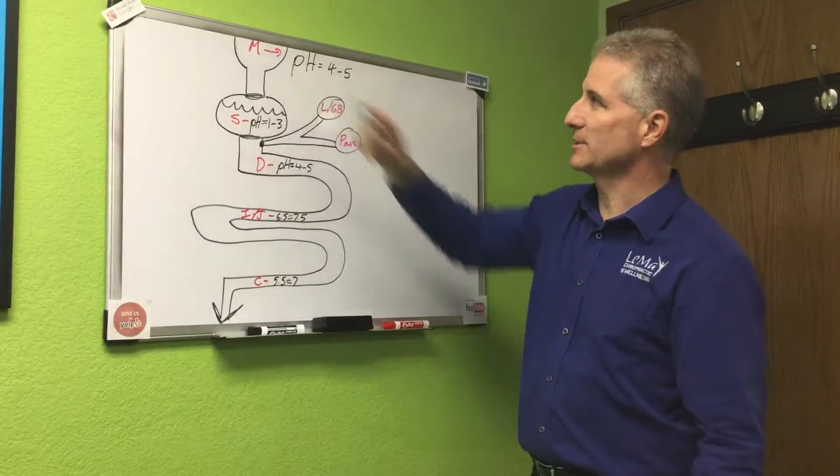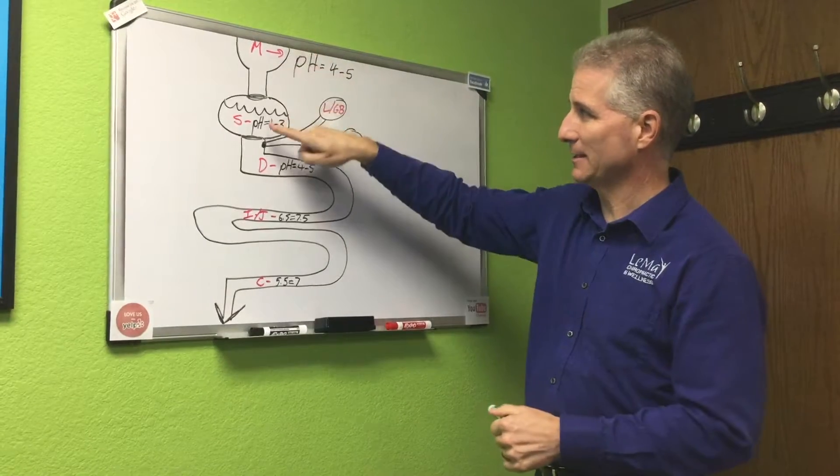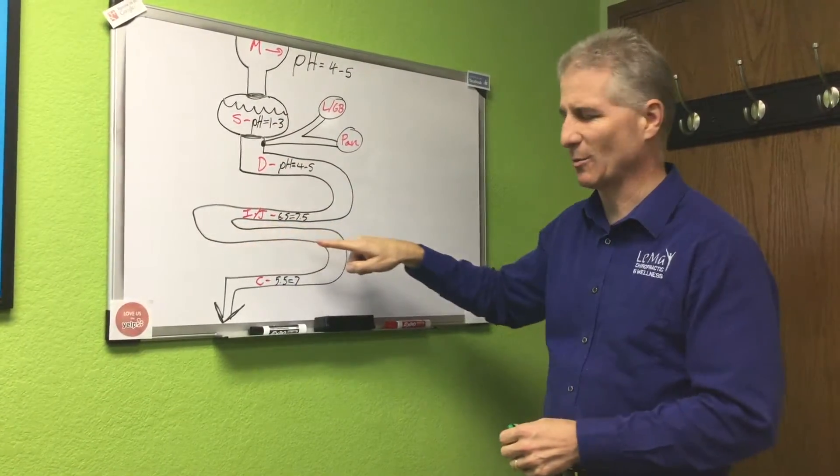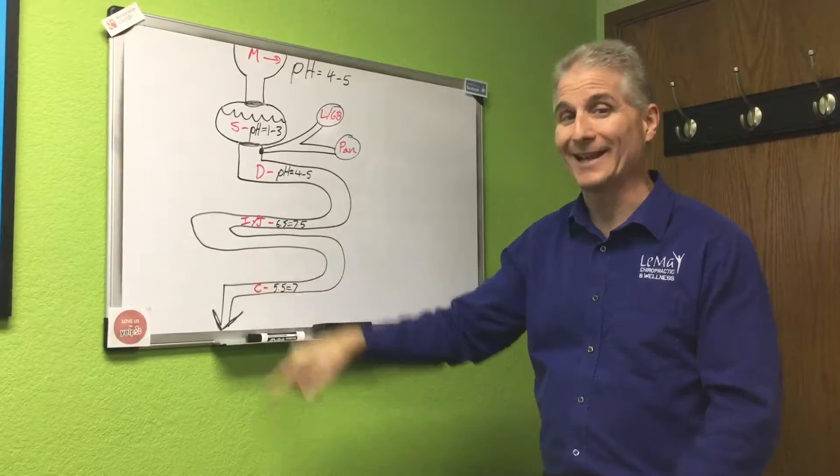But first of all, when you take a look at here's the mouth up here going all the way down into the stomach. This is the duodenum and the ileum and jejunum, which is your small intestines, and all the way out to the colon and out.